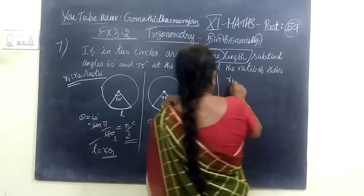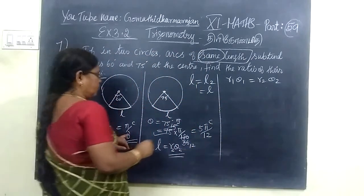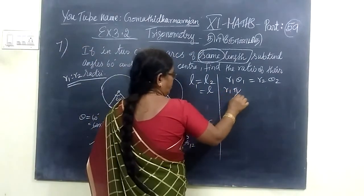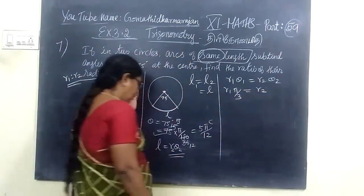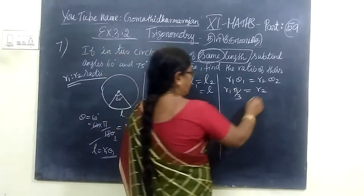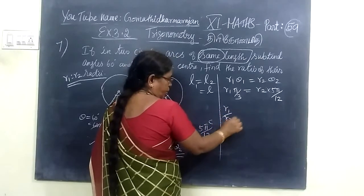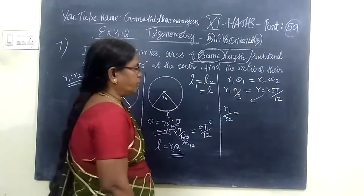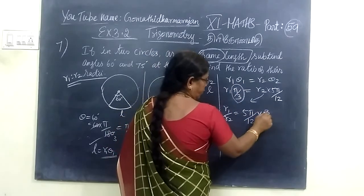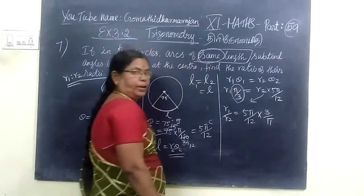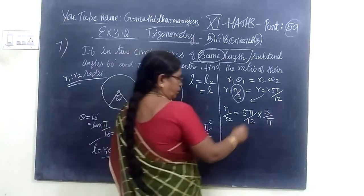r1 times θ1 equals r2 times θ2. So r1 by r2 equals θ2 by θ1, which is 5π by 12 divided by π by 3. Taking reciprocal, this is π by 3 times 12 by 5π. Now we will cancel.